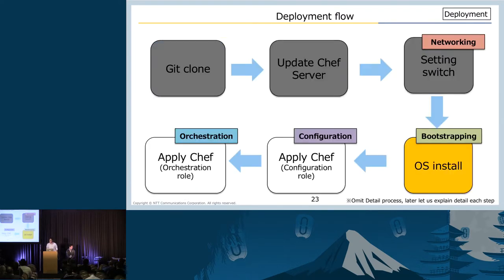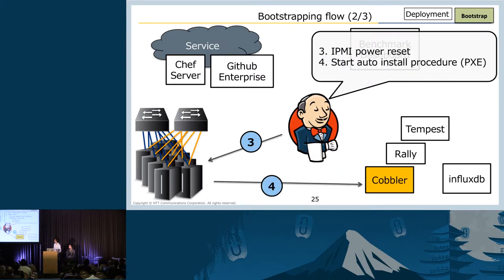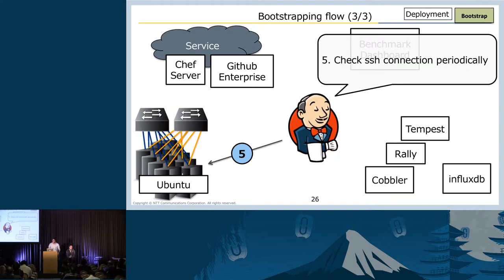So we can move to bootstrapping. In bootstrapping, we need to prepare a PXE server for auto OS installation. We are using Cobra for that. Cobra configuration is managed by Chef server, so changing configuration is enabled automatically. The next step is to turn the server on, then start PXE boot. The last step is to check whether the server is ready or not, judged by SSH connection. When we can log in to the server, bootstrapping is finished.